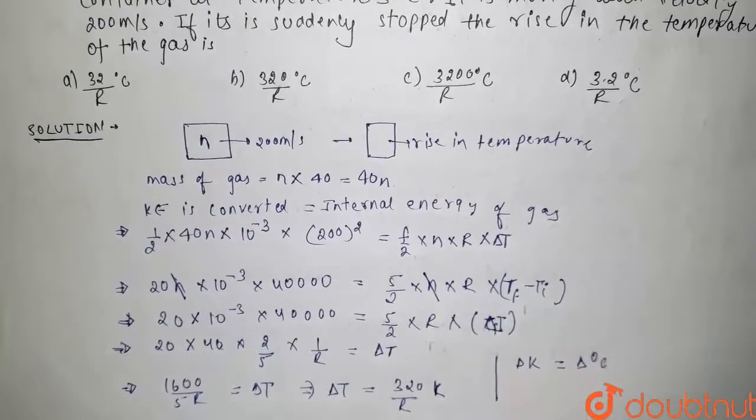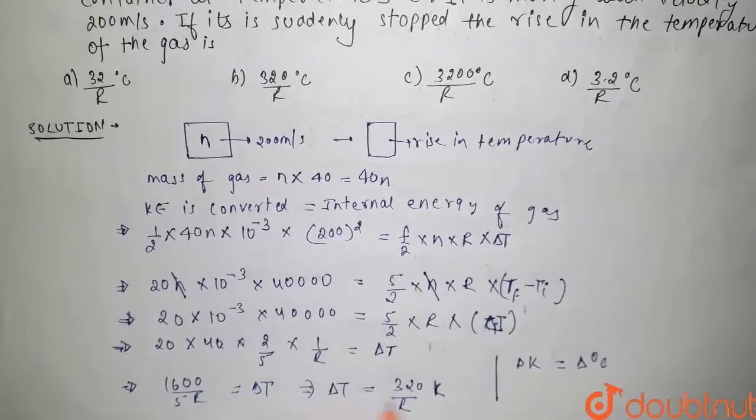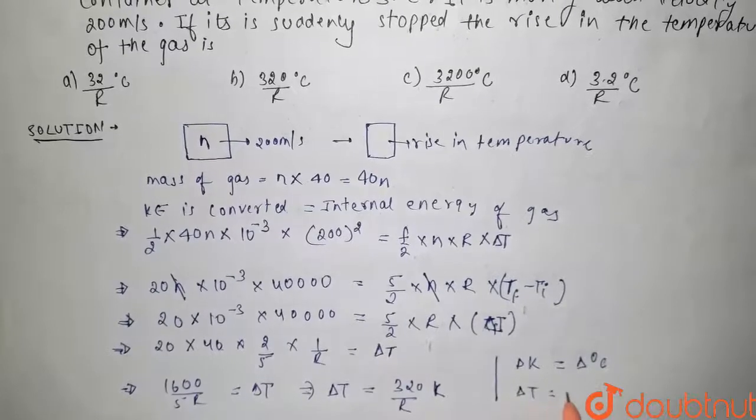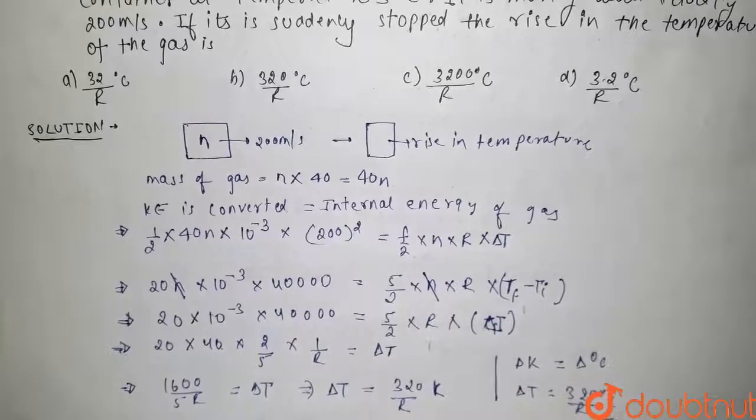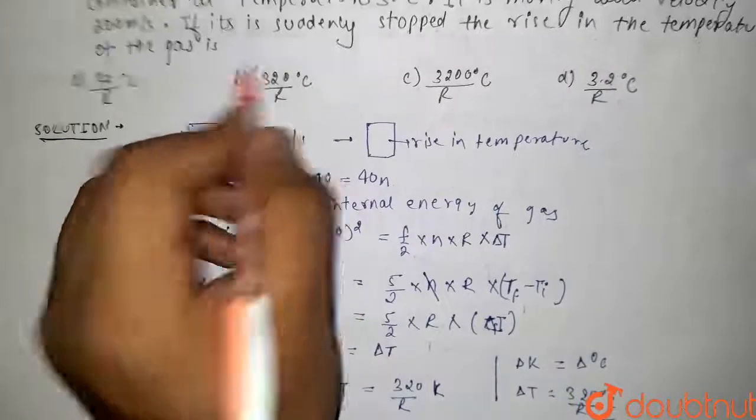So from here, since this is change in temperature, we can say that delta T is also equal to 320 by R degree Celsius. So correct option is option B. Thank you guys.